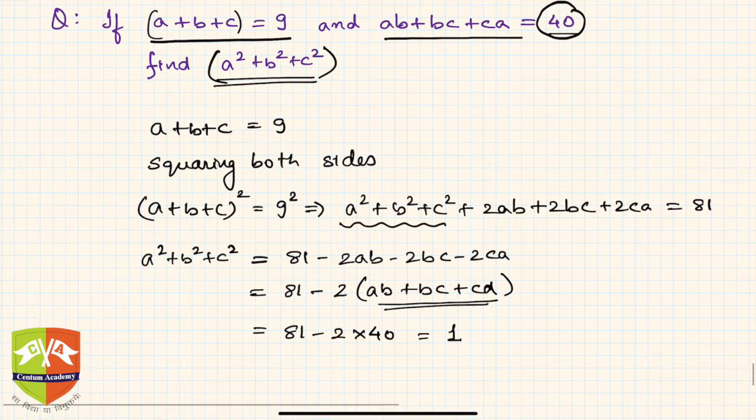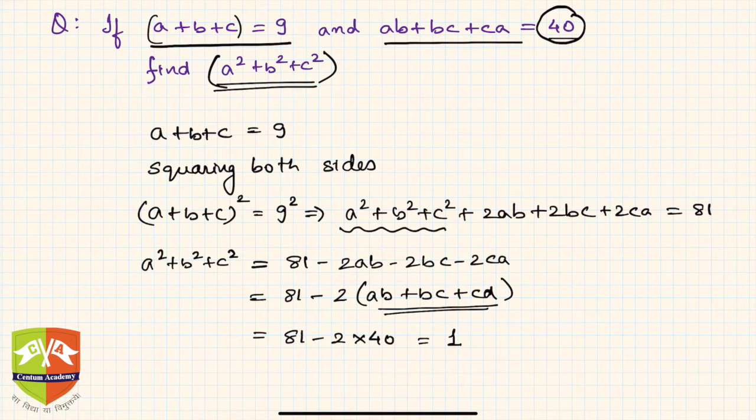So what is the learning? We implemented or applied this a plus b plus c whole square trinomial. And the moment it was asked to find out a square plus b square plus c square, remember that you have to deal with the trinomial square identity. And that's how we solve this problem.